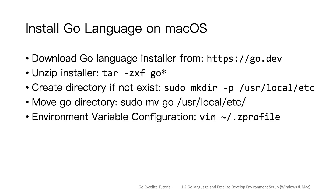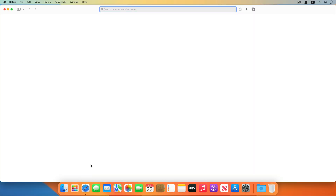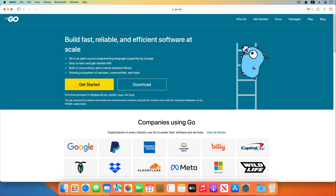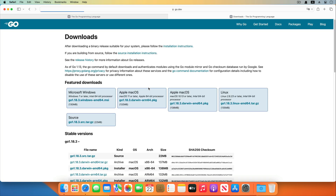First, I will introduce how to set up the Go development environment in macOS. This section includes the following five parts. Let's get started. Open the browser and visit the Go language official website go.dev. Click the download button and go to the download page.